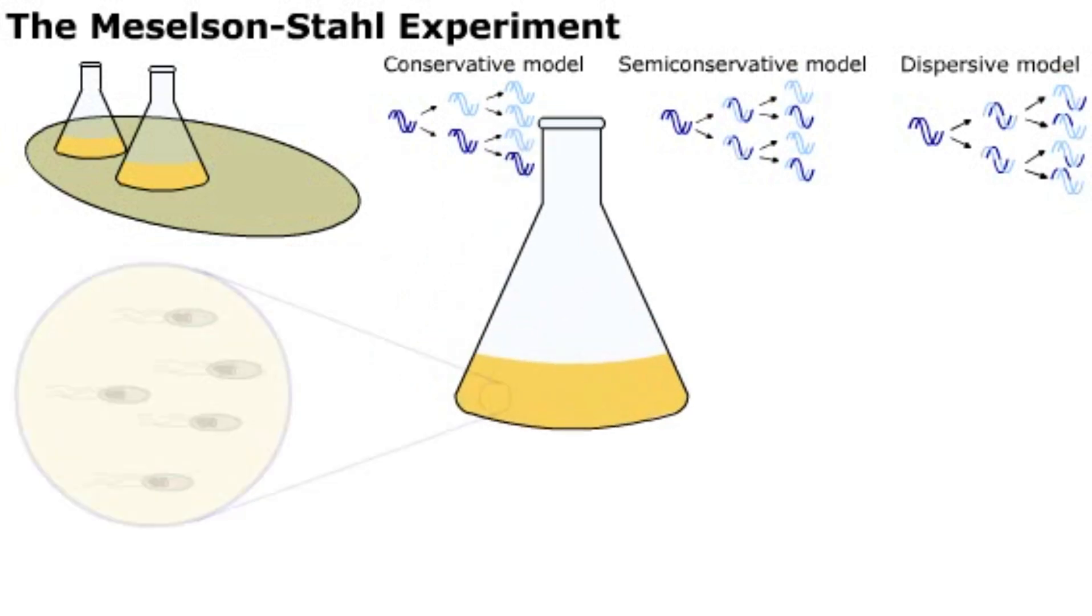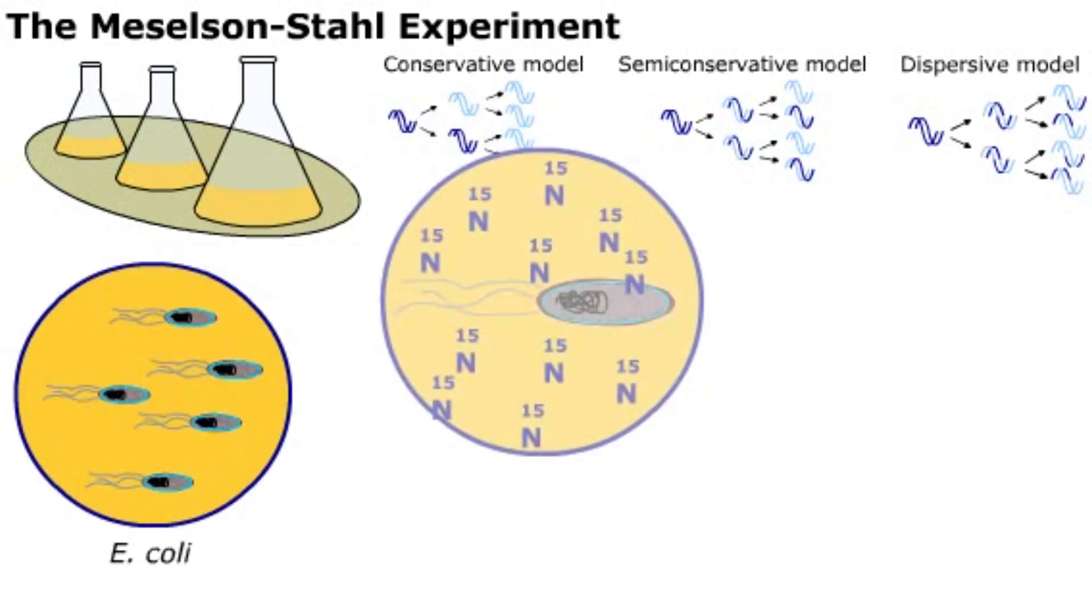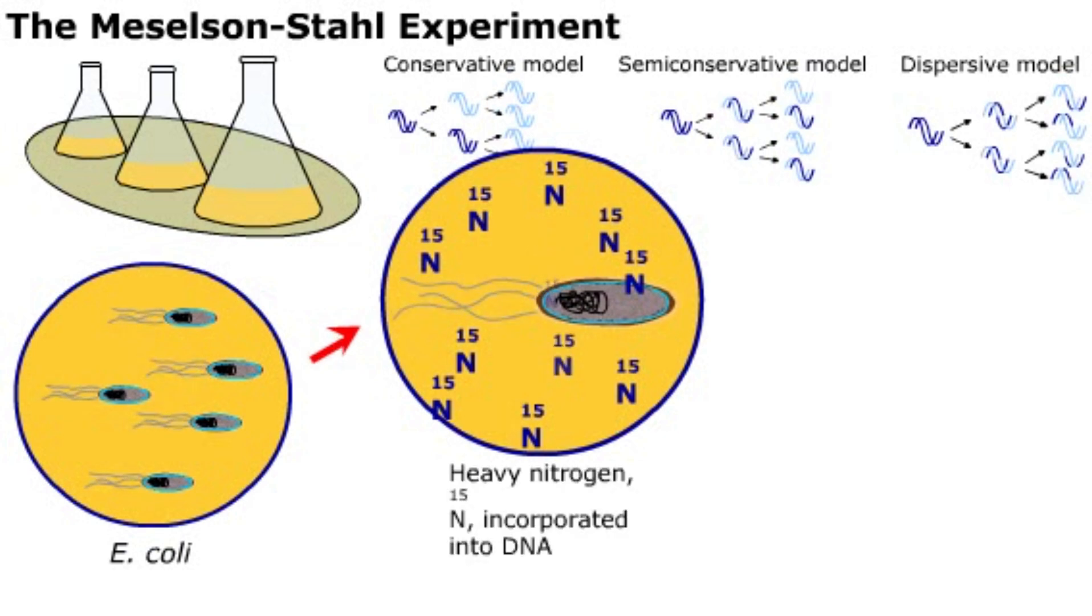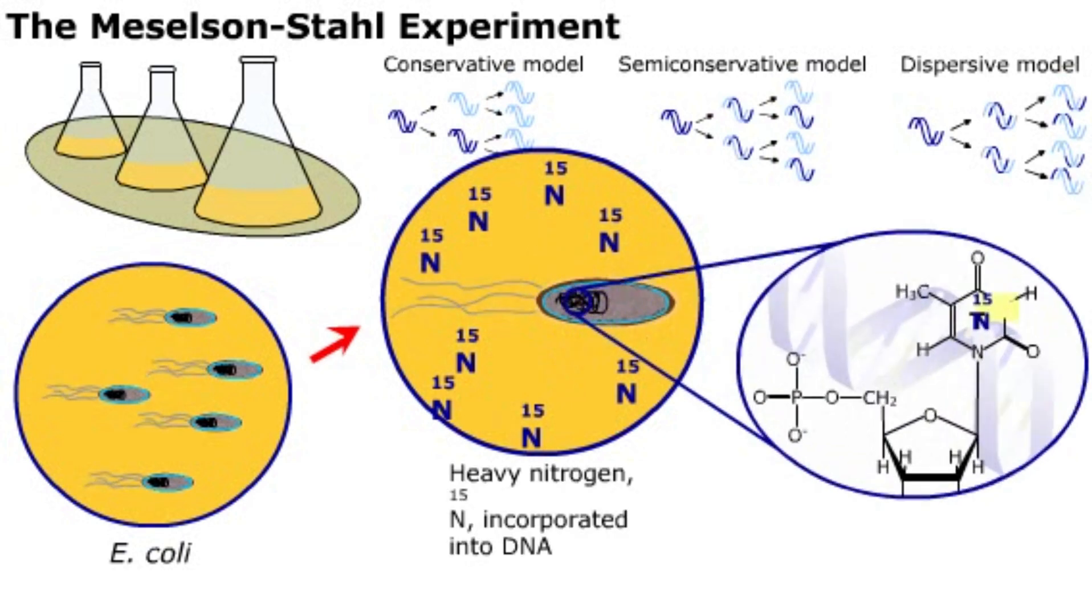They grew cells of the bacterium E. coli in the presence of a heavy nitrogen isotope. The heavy nitrogen was incorporated into the bacterial DNA during replication.